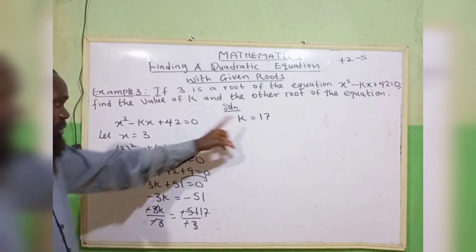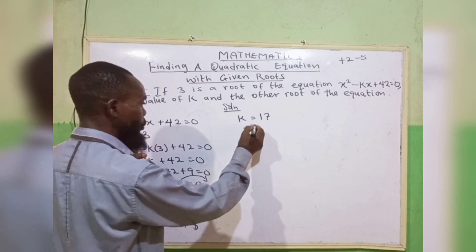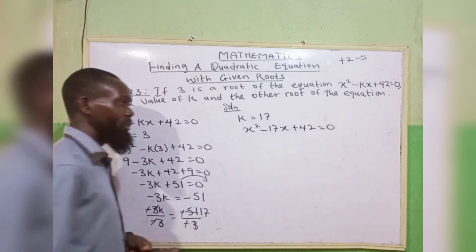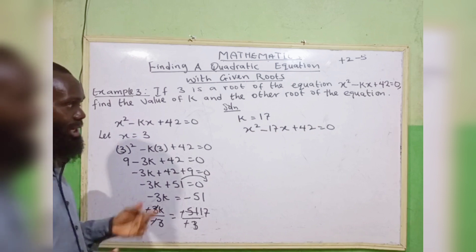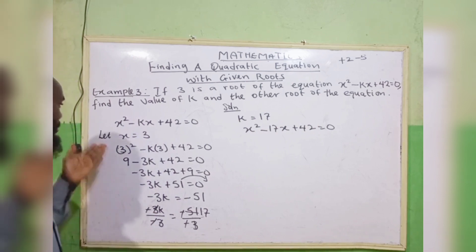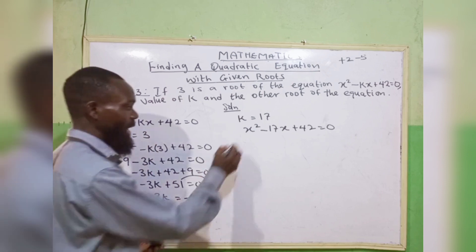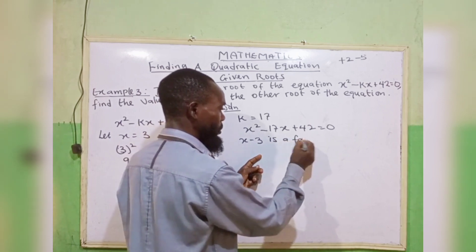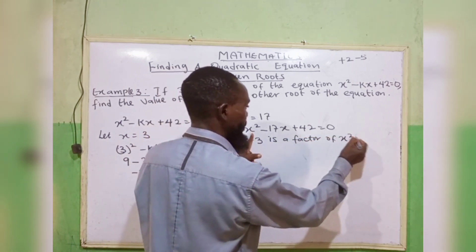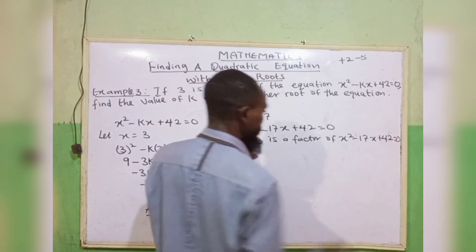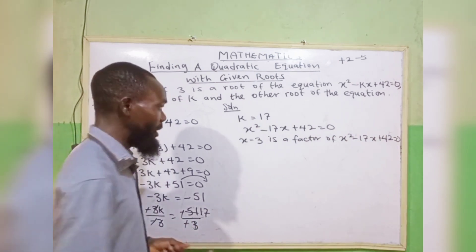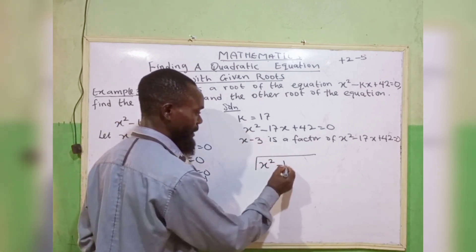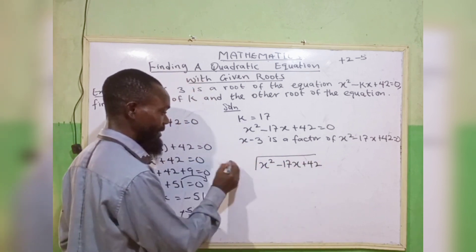We now substitute k equals 17 into the equation: x squared minus 17x plus 42 equals 0. Since x equals 3 is a root, when 3 moves across we get x minus 3 equals 0, so x minus 3 is a factor of x squared minus 17x plus 42. We use long division to find the other factor.